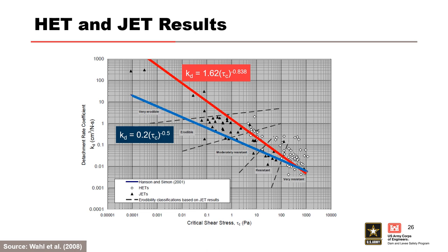The results of 61 laboratory hole erosion tests and 47 laboratory and field jets performed by reclamation since 2007 are plotted on this figure. Although the hole erosion test in general exhibits lower detachment rate coefficients and higher critical shear stresses, both sets of data generally follow the best fit line proposed by Hansen and Simon 2001 for JET results. The red line is the updated relationship based on additional JET testing from Simon et al. 2011. As previously mentioned, erodibility coefficient and critical shear stress are inversely related, and their values vary over several orders of magnitude for compacted soils.